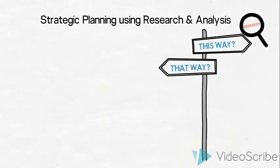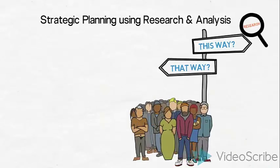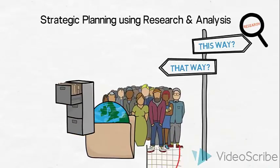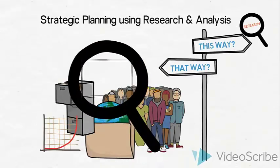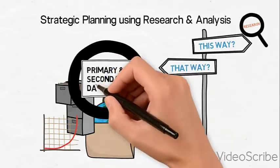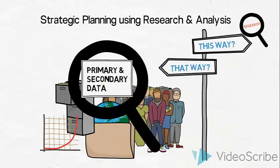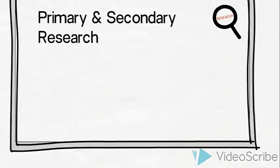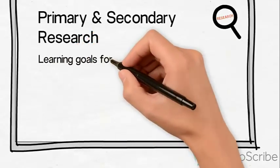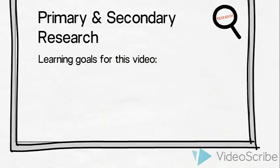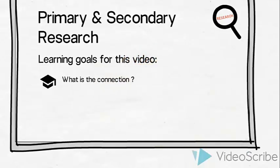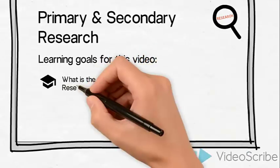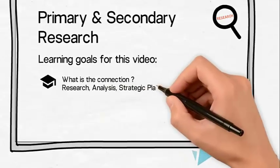When organizations enter into strategic planning, they conduct different types of relevant research and analysis. As part of this process, marketers talk about collecting secondary and primary data. Let us list the learning goals for this video. Firstly, the goal is to establish a connection between primary and secondary research and the rest of the research, analysis, and strategic planning process.